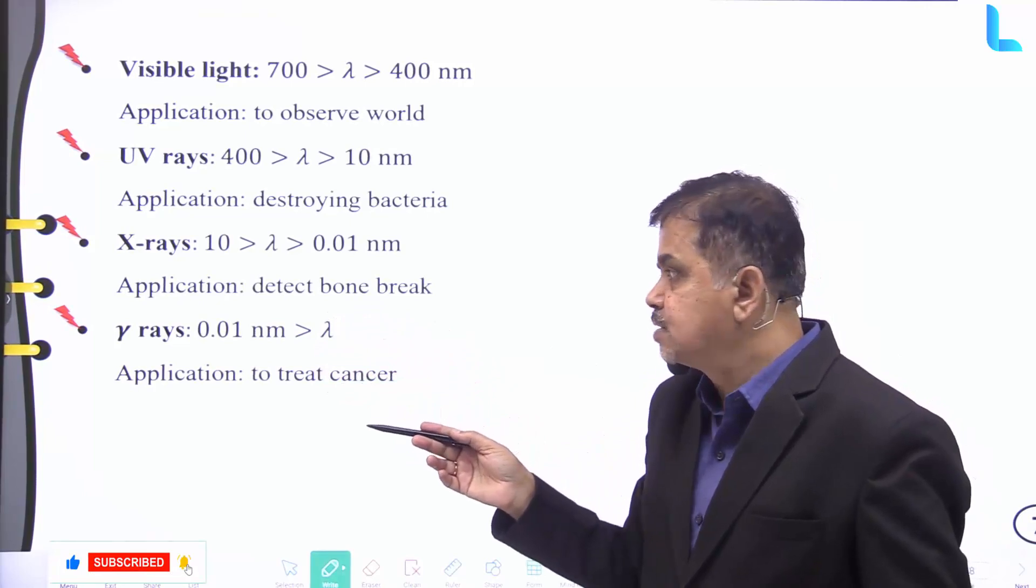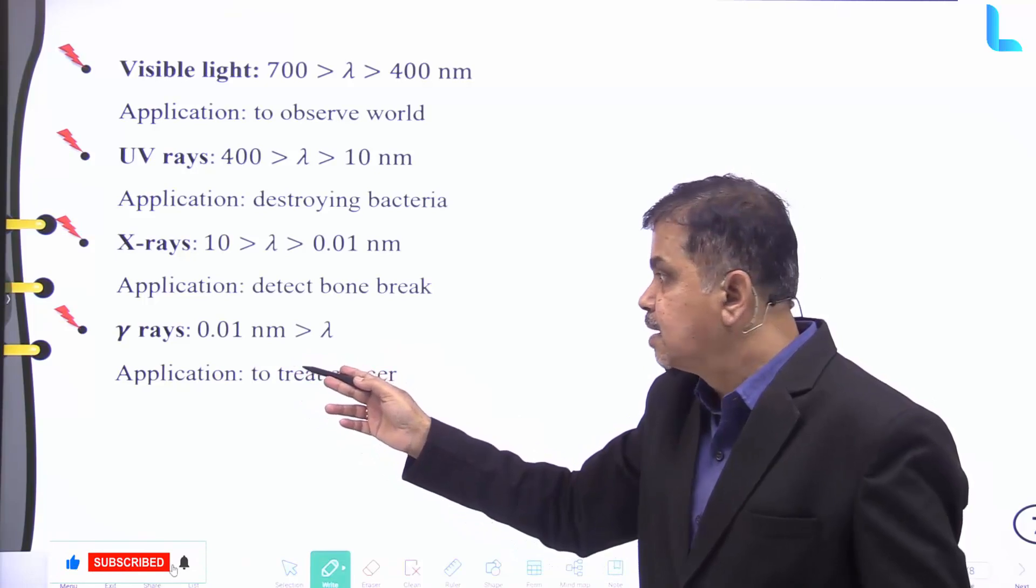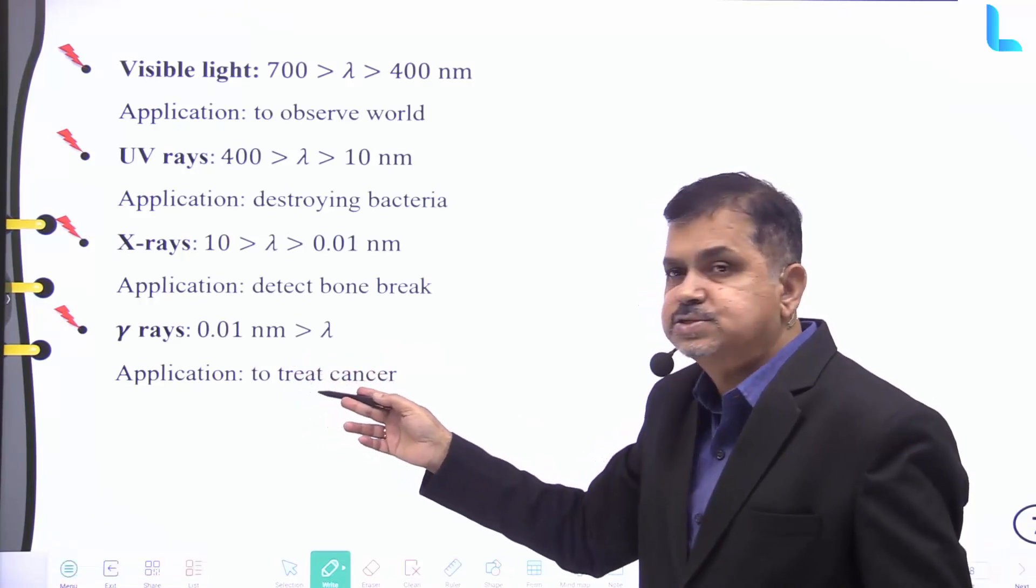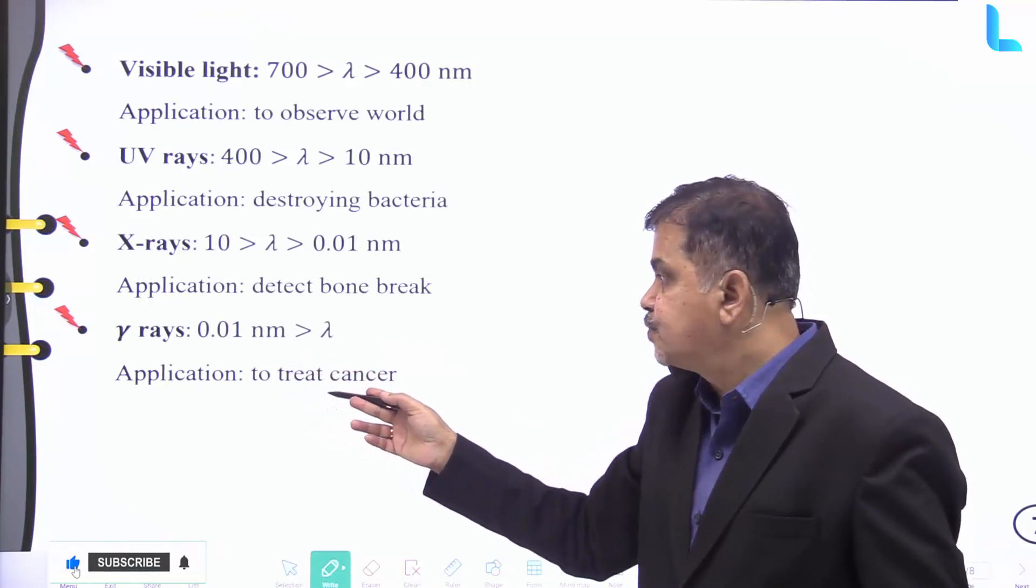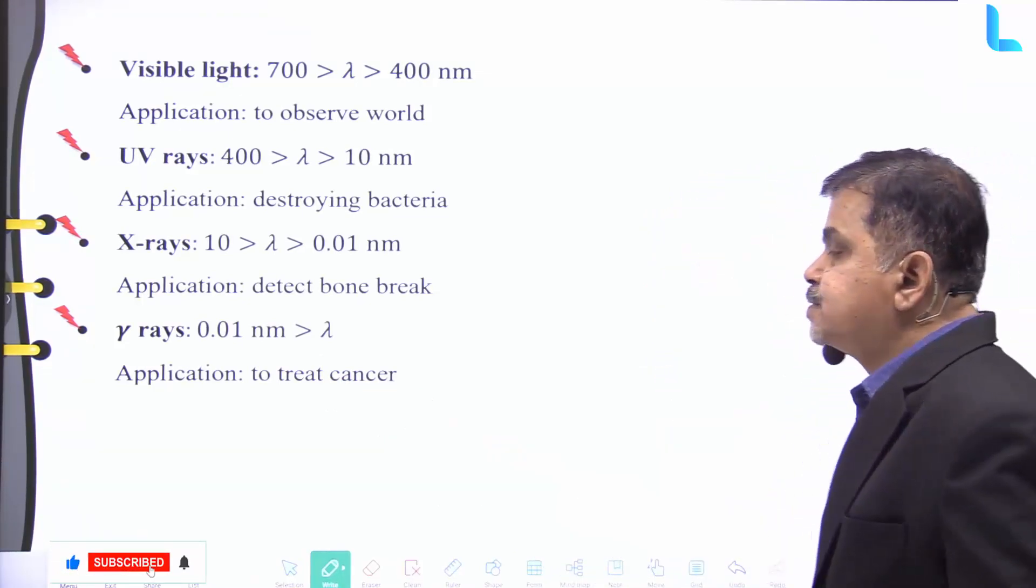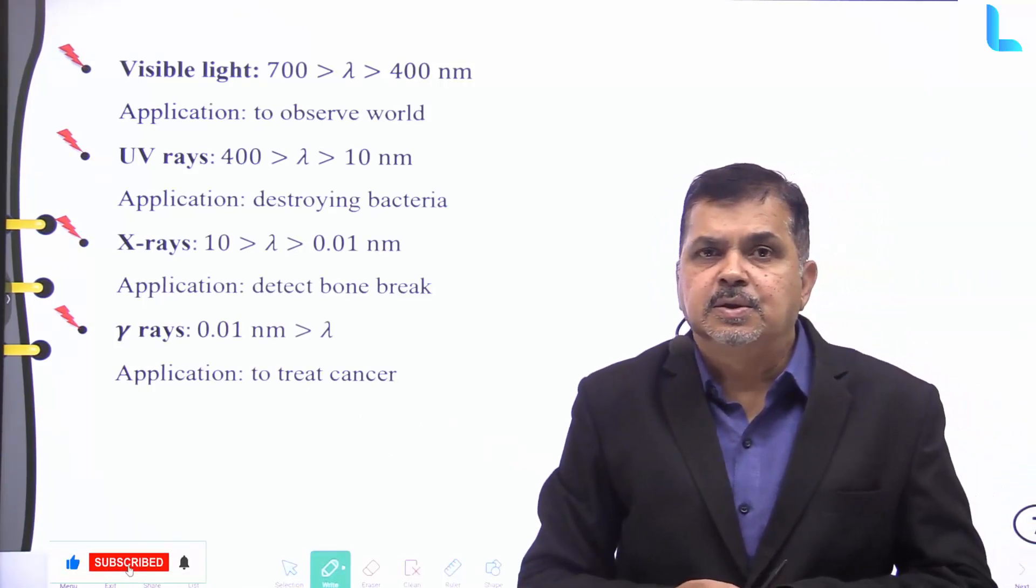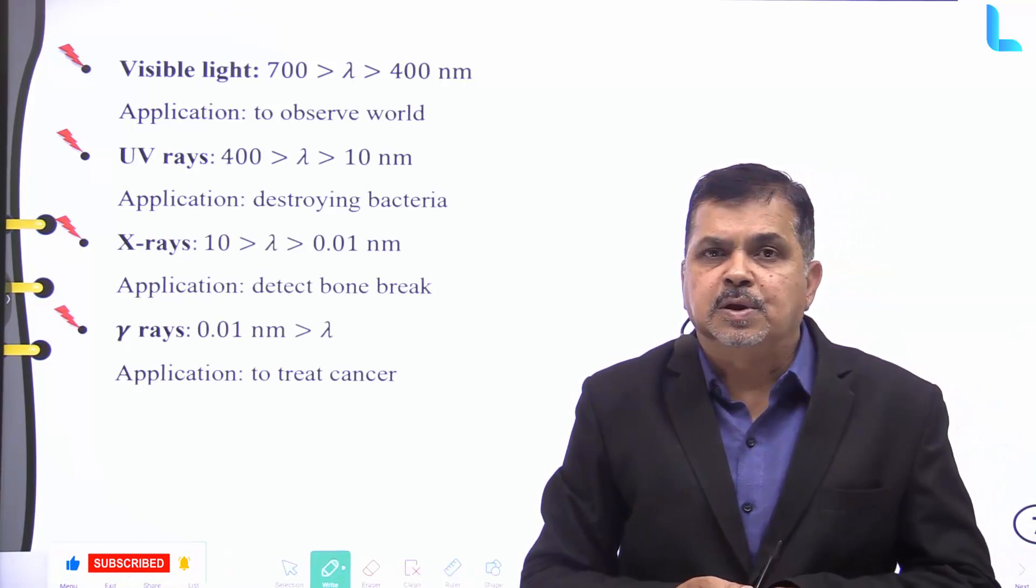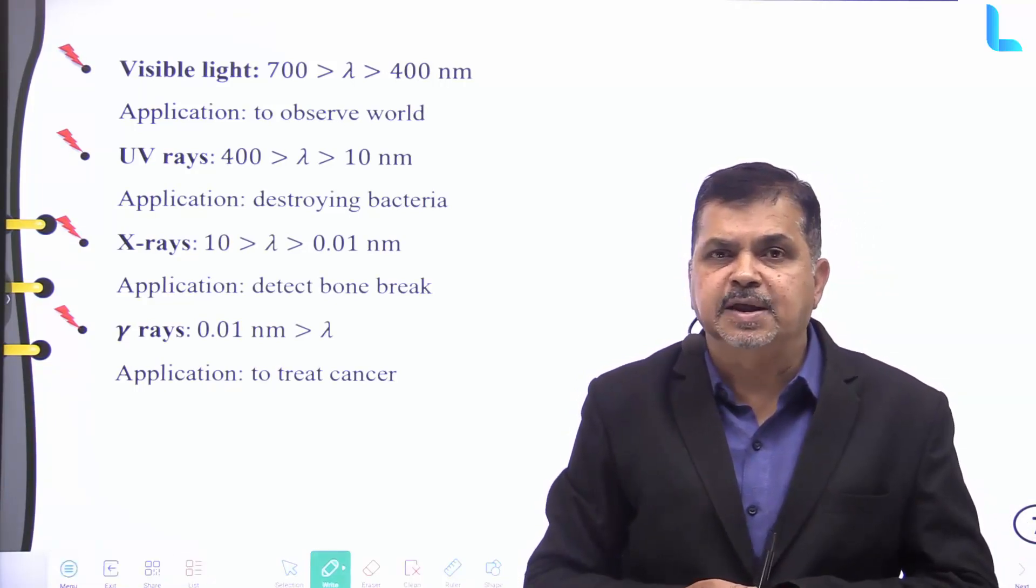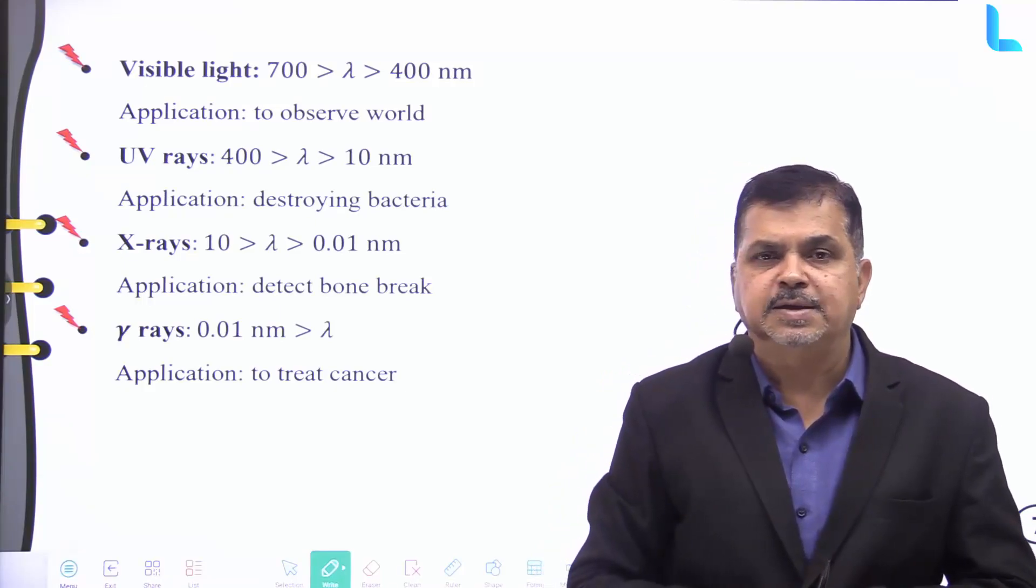And gamma rays have a range of 0.01 nanometers, and the application is in the area of treating cancer. Thus we have made an important last minute understanding of the formulas at a glance and made a quick revision of the subject of physics in Chapter 8. Thank you.